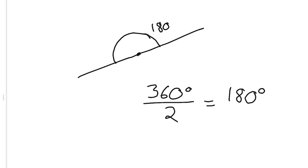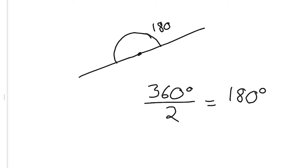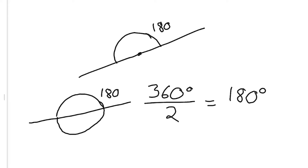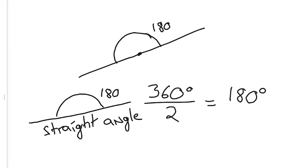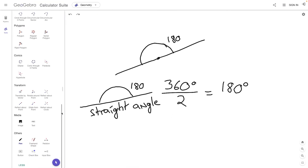The thing to realize is that this semicircle is literally a straight line with an angle on it. And again, we know that that's 180 degrees because it is half of a circle, which is 360 degrees. So when there is an angle on a straight line, we call that a straight angle. A straight angle is always 180 degrees. That's the first intuition we want to have: straight angles are 180 degrees.